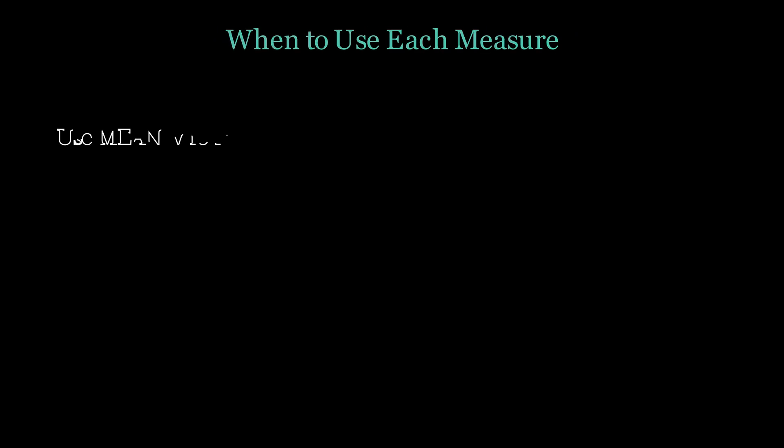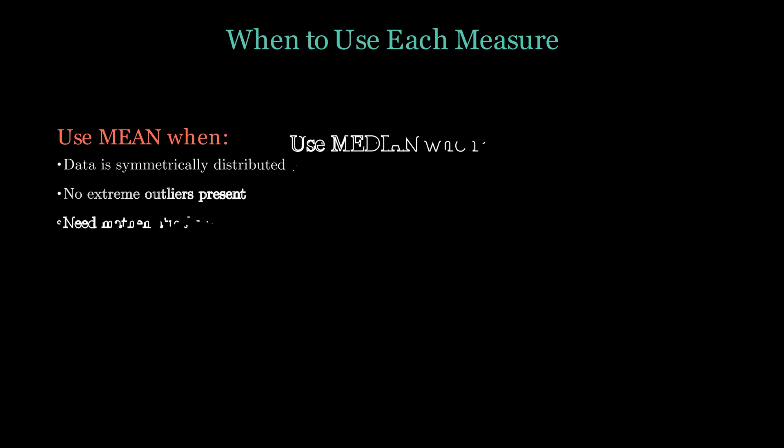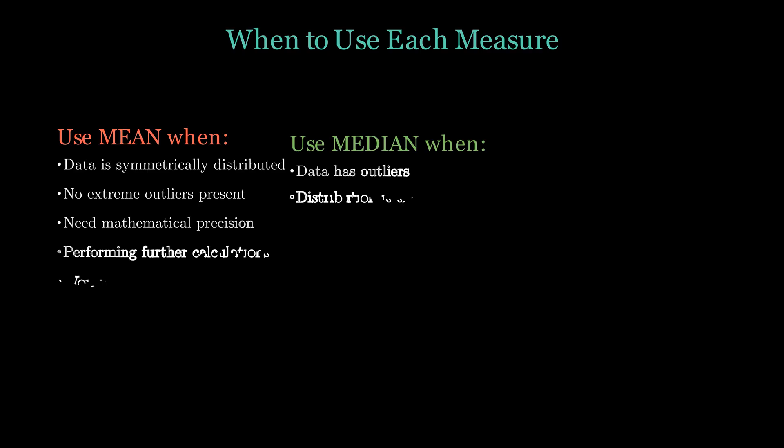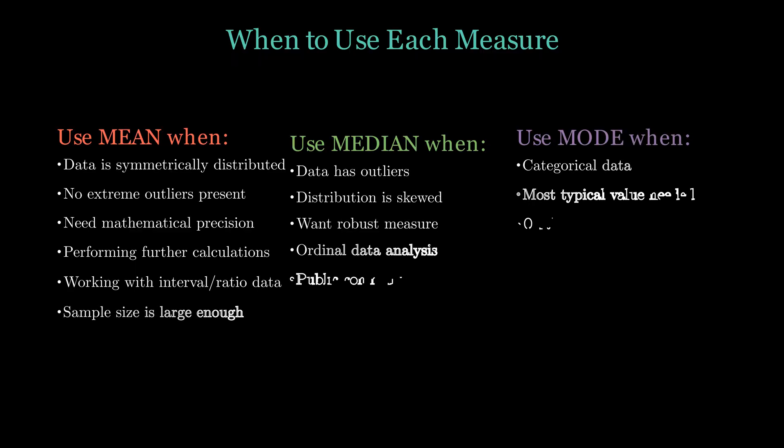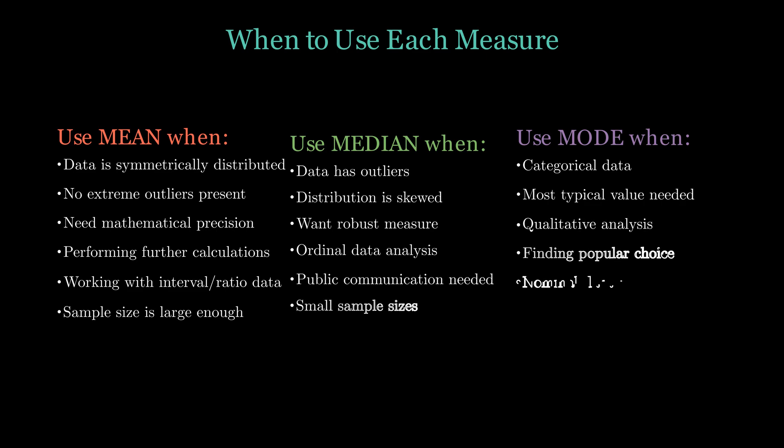When should you use each measure? Use the mean for symmetric data without outliers, especially when mathematical precision matters and you are planning further calculations. Use the median when dealing with skewed data or outliers, as it provides a more robust center and is better for public communication. Use the mode for categorical data or when you need the most typical or popular value—it's perfect for business decisions and inventory management.